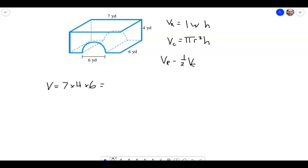And that is going to equal, let me make a calculator here, 7 times 4 times 6, we have 168. So the volume of our rectangular prism is equal to 168.